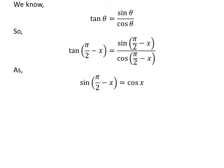As we know, the trigonometry identity sine of half of pi minus x is equal to cosine of x. The proof of this trigonometry identity has been explained in the video appearing in the upper right corner. The link of the video has also been mentioned in the description section.